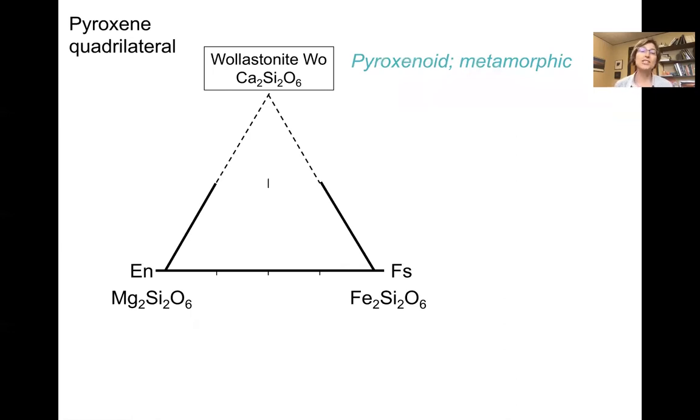Recall that we start off with a ternary compositional system where we're looking at wollastonite, a calcium pyroxenoid at the top of our triangle, and then at the bottom left we'll have the composition for enstatite, a magnesium pyroxene, and ferrosilite, an iron-rich pyroxene.